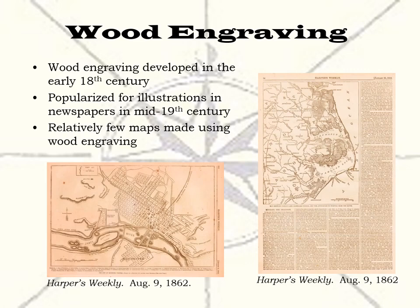Most wood engraved maps appeared in illustrated newspapers, though some encyclopedias and textbooks also used them. By the late 19th century, other processes were developed which better filled the niche that wood engraved maps had been used for. These new processes included some photomechanical processes and also wax engraving. That is the last of the relief processes used to make maps that we will look at.